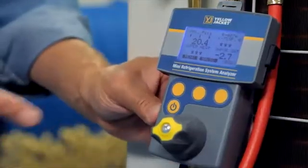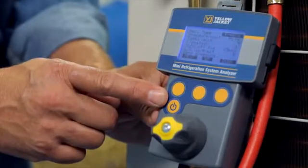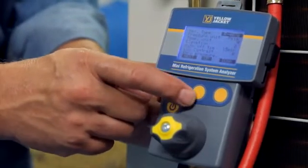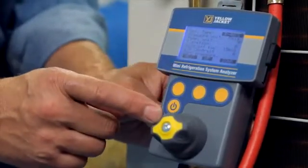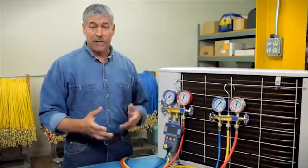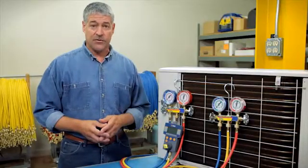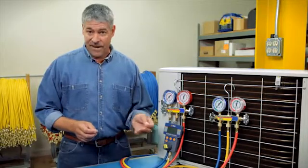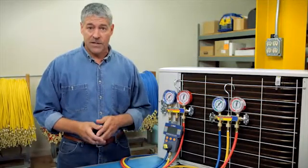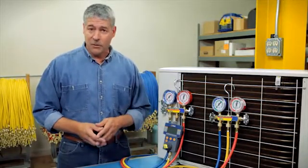Refrigerant type is the first option on the main menu. Use the up and down keys to find the desired refrigerant, then press next to select. With nearly 100 refrigerant types to choose from, you'll be happy to know you can program a list of favorites to shorten your scroll list to only the refrigerants you use the most.